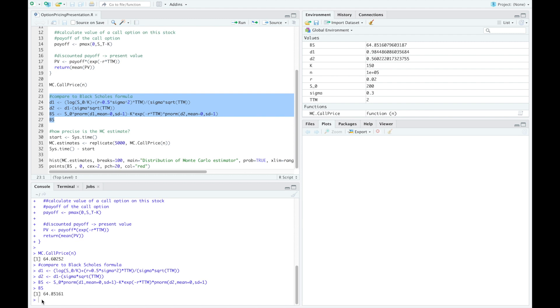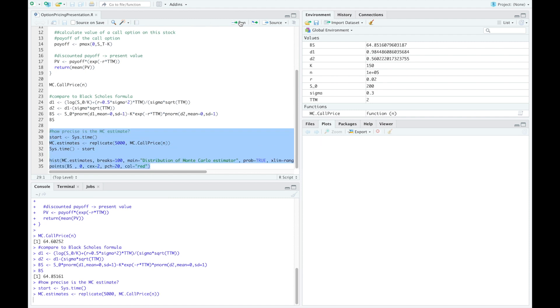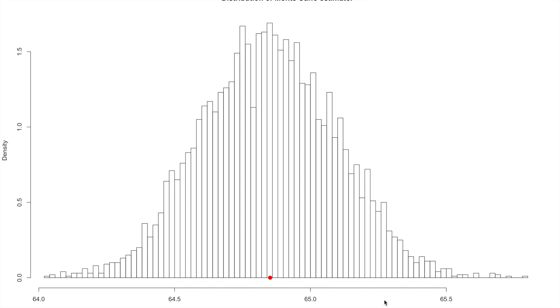To evaluate how precise the Monte Carlo estimator is we also have to consider its variation. For this we create 5000 Monte Carlo estimates using the replicate function and look at the distribution of the estimate. This takes a short time. It took about 43 seconds. We plotted the 5000 estimates in a histogram.